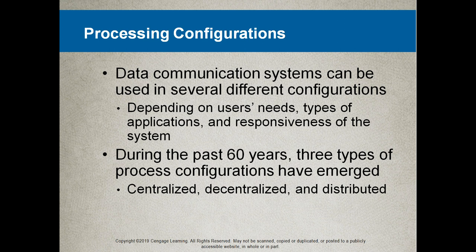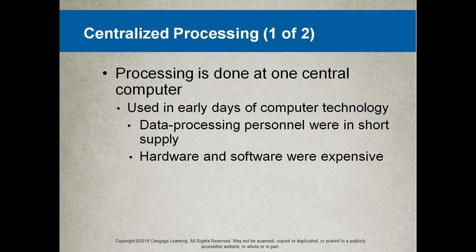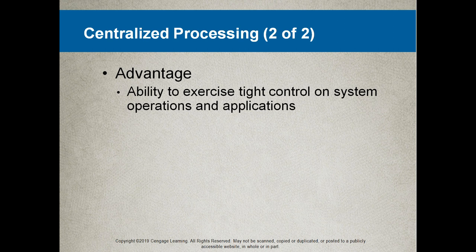Processing configurations — data communication systems can be used in several different configurations depending on user needs, the types of applications, and responsiveness of the system. During the past 60 years, three types of processing configurations have emerged: centralized, decentralized, and distributed. With centralized processing, all the processing is done at one central computer — used in the early days when data processing personnel were scarce and hardware and software were expensive. The advantage was tight control on system operations; the disadvantage was a lack of responsiveness to users' needs.